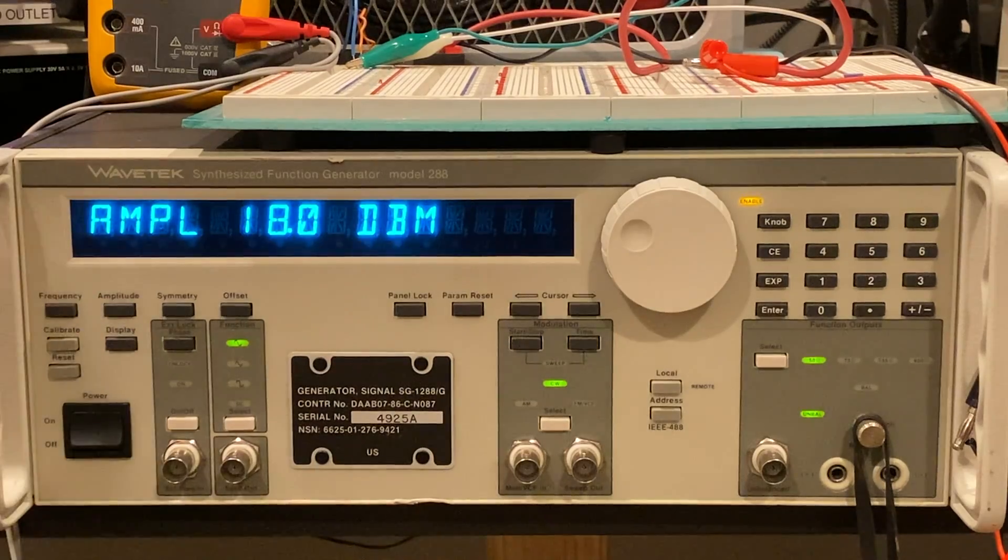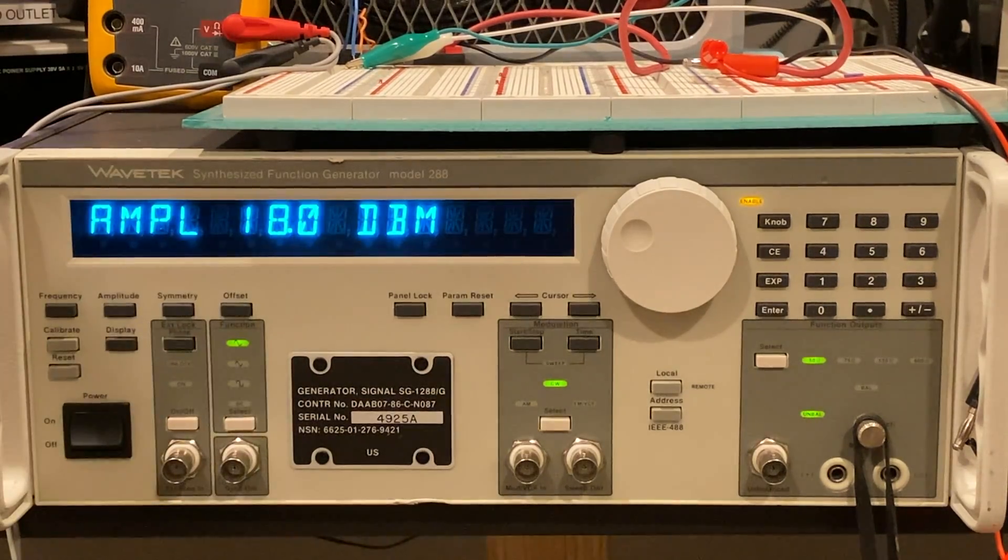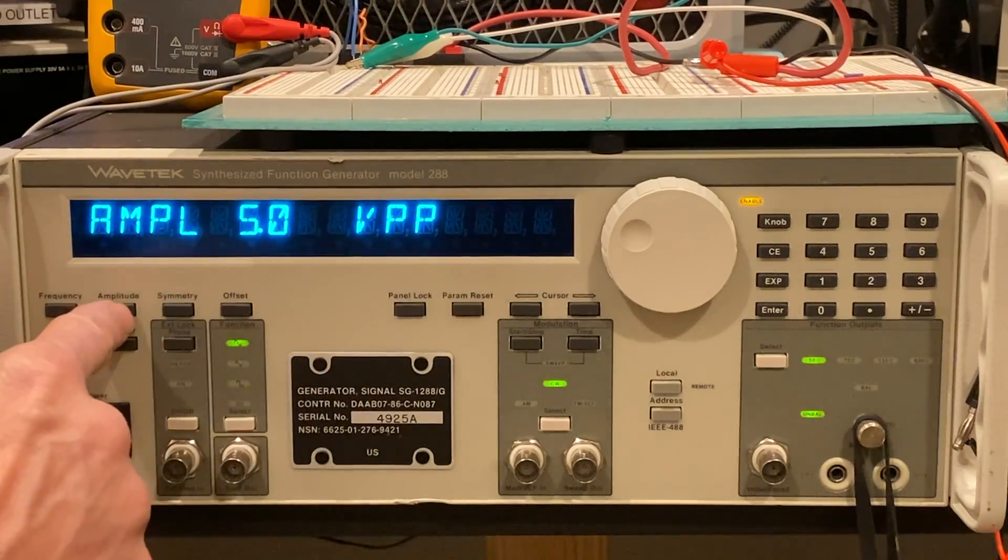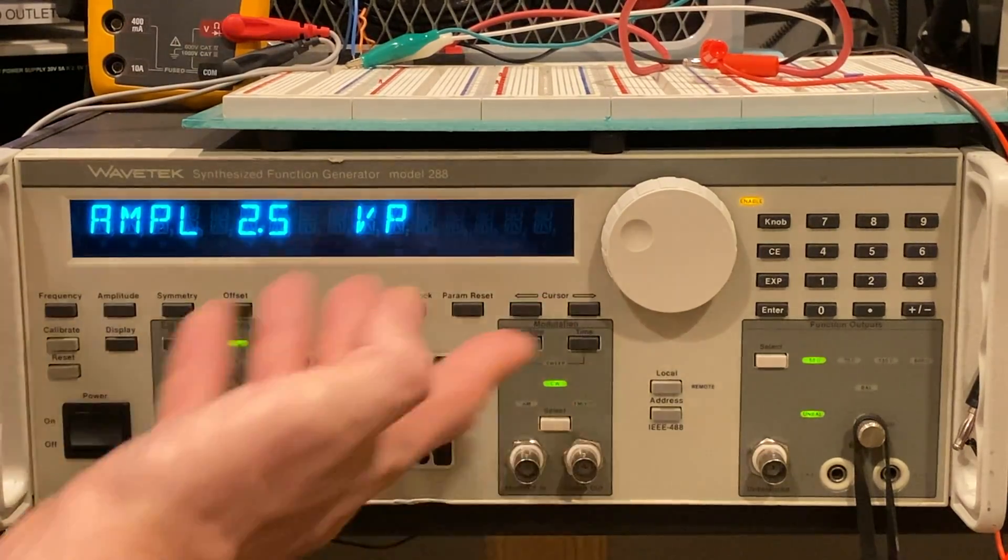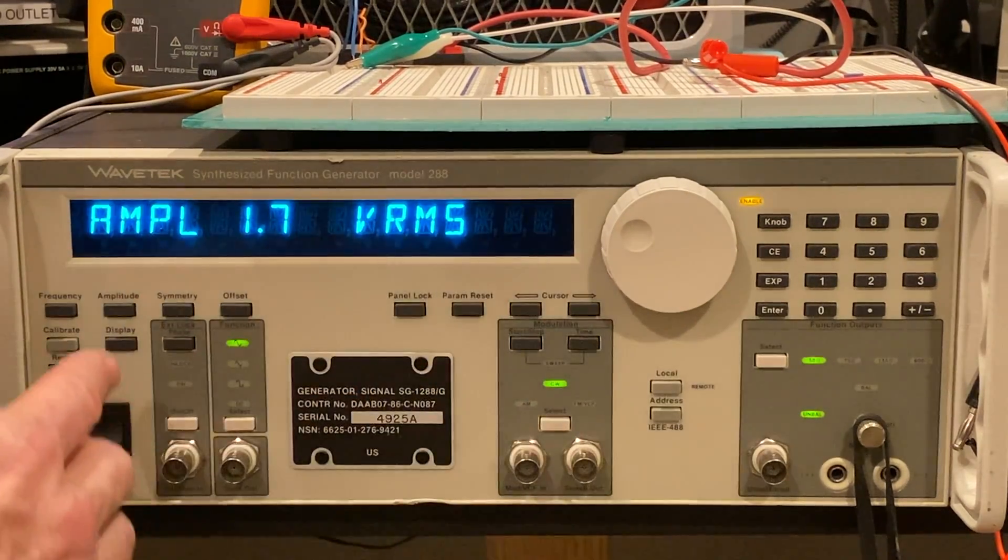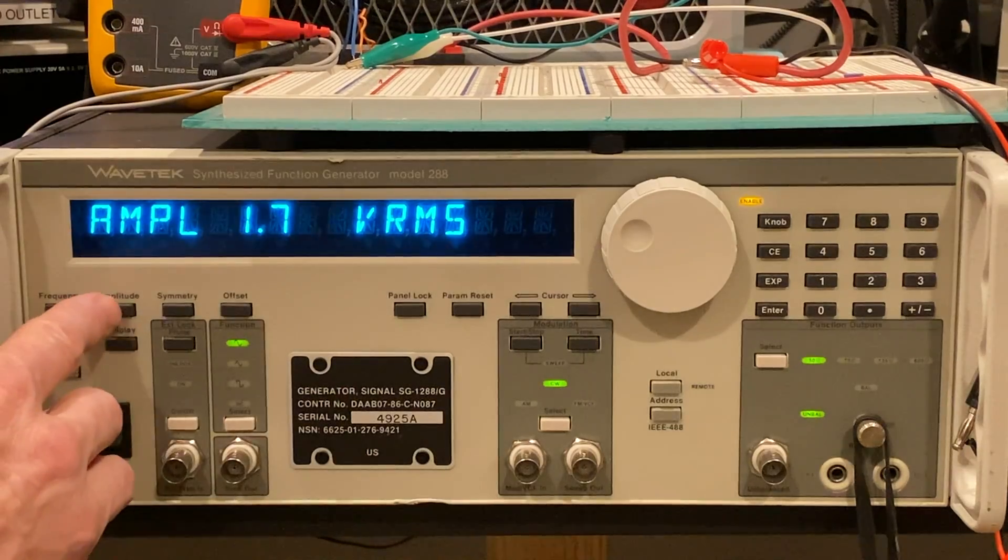If we go to amplitude we can see that the amplitude is set at 18 dBm, 5 volts peak, 2.5 volts peak, and then 1.77 volts RMS and we'll talk about that here shortly.